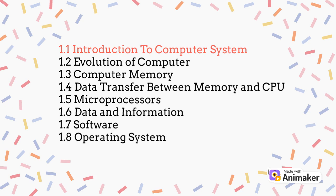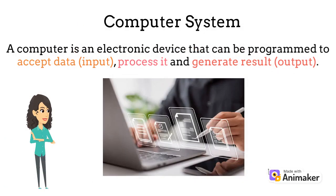Let us begin our discussion with understanding what is a computer. When speaking of a computer, we consider three main aspects to it which are input, processing, and output. A computer is an electronic device that can be programmed to accept data — which is considered as input — then process it to finally generate some result that will be our output.